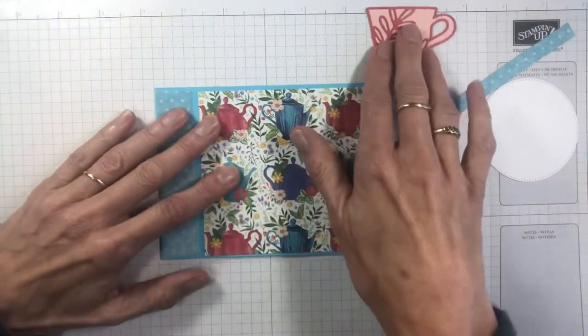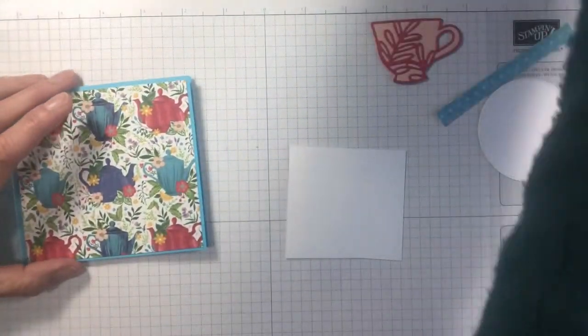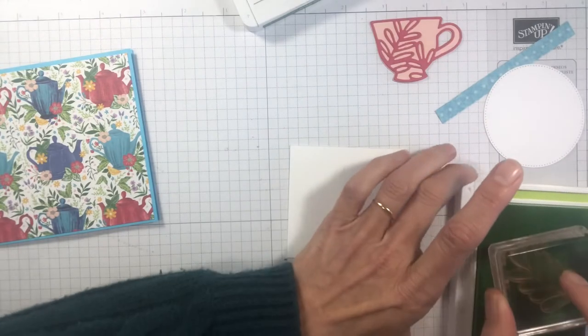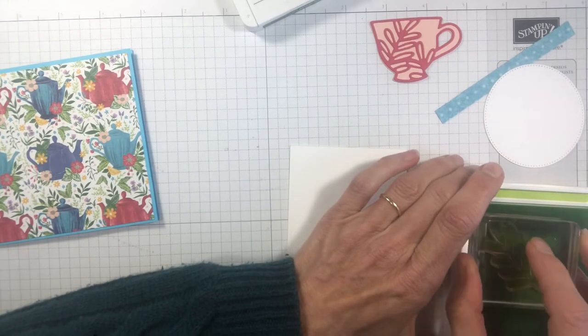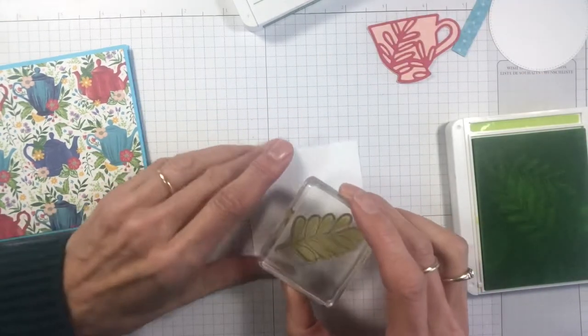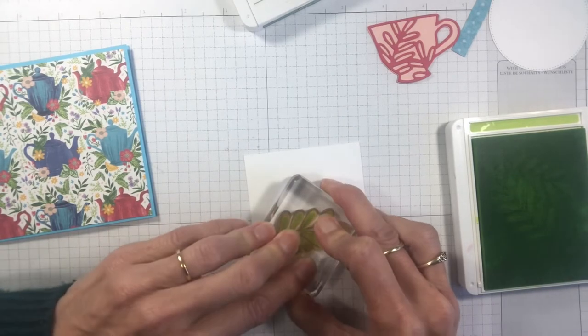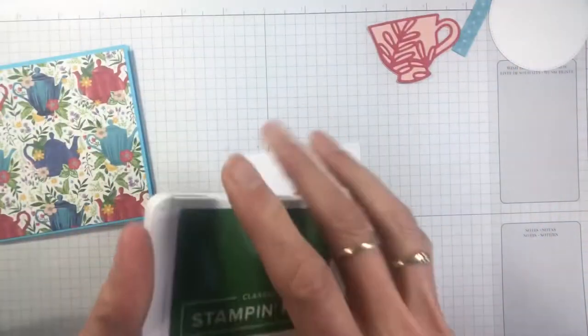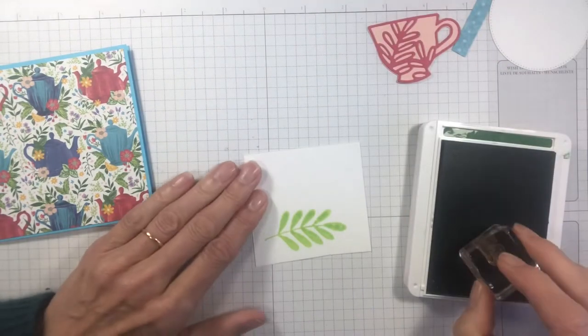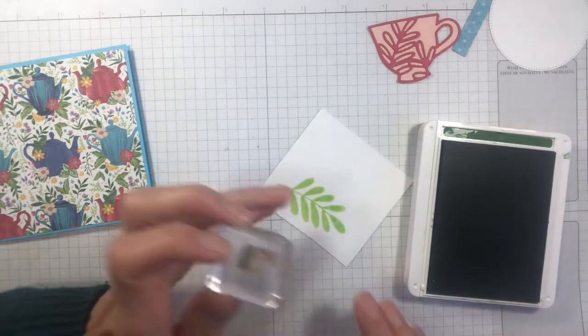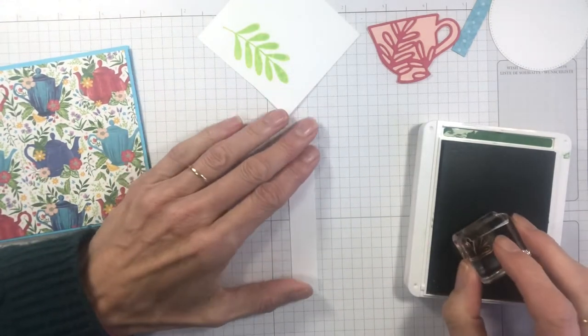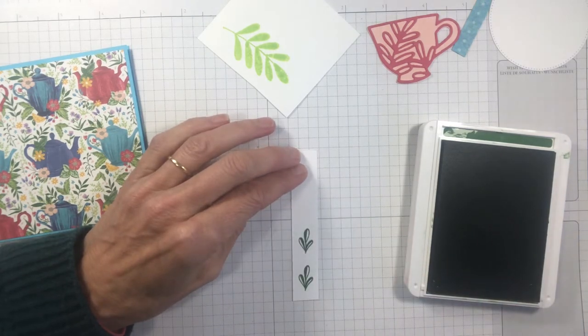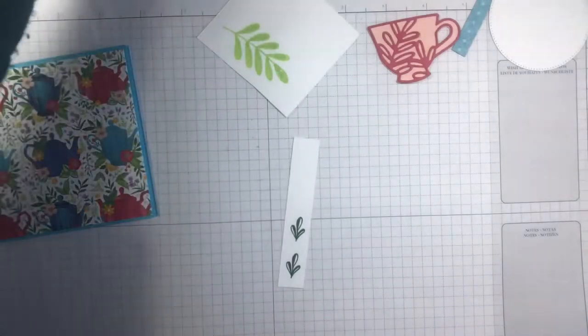So I'm just quickly going to stamp up some leaves for our teacup now. I'm using the Parakeet Party for the larger leaf in the stamp set. Just give that a bit of an ink up. And then I have Garden Green for the smaller leaves. We'll just add a couple of those. I can use that little white piece rather than stamping on that great big piece.